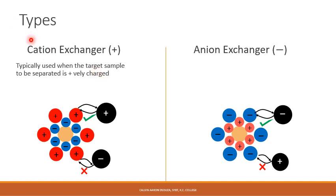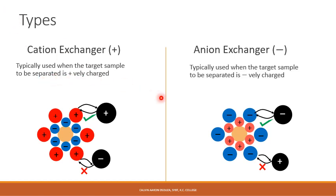It's pretty much obvious from this diagram that you would usually use a cation exchanger when your target protein sample that you wish to separate is positively charged. On the other hand, you would use an anion exchanger when the protein you wish to separate or stick to the stationary phase is negatively charged.